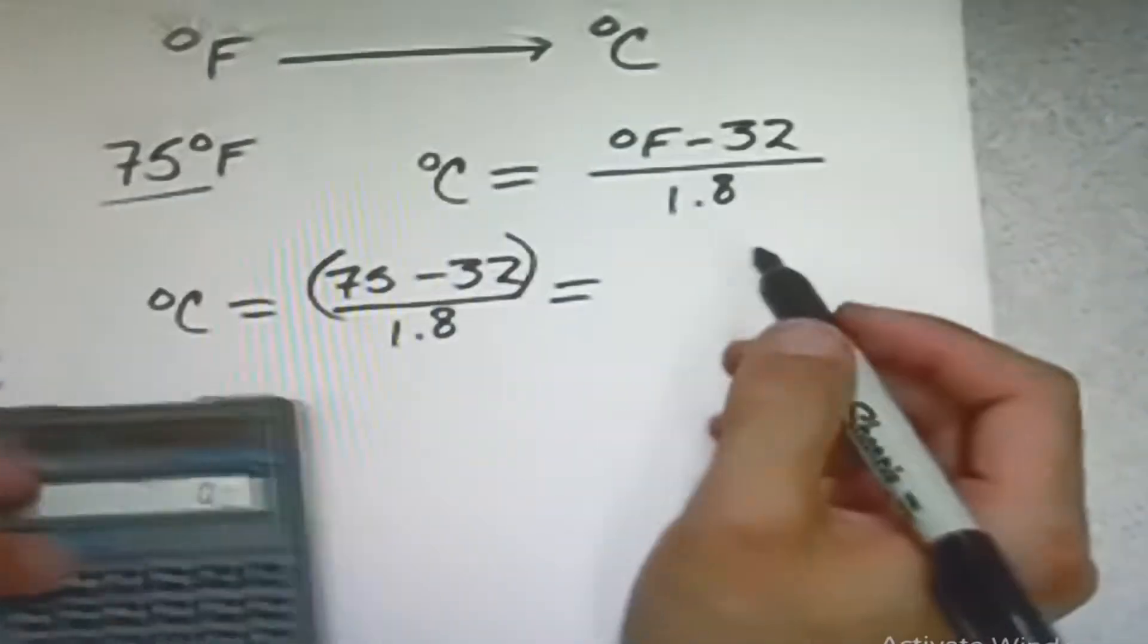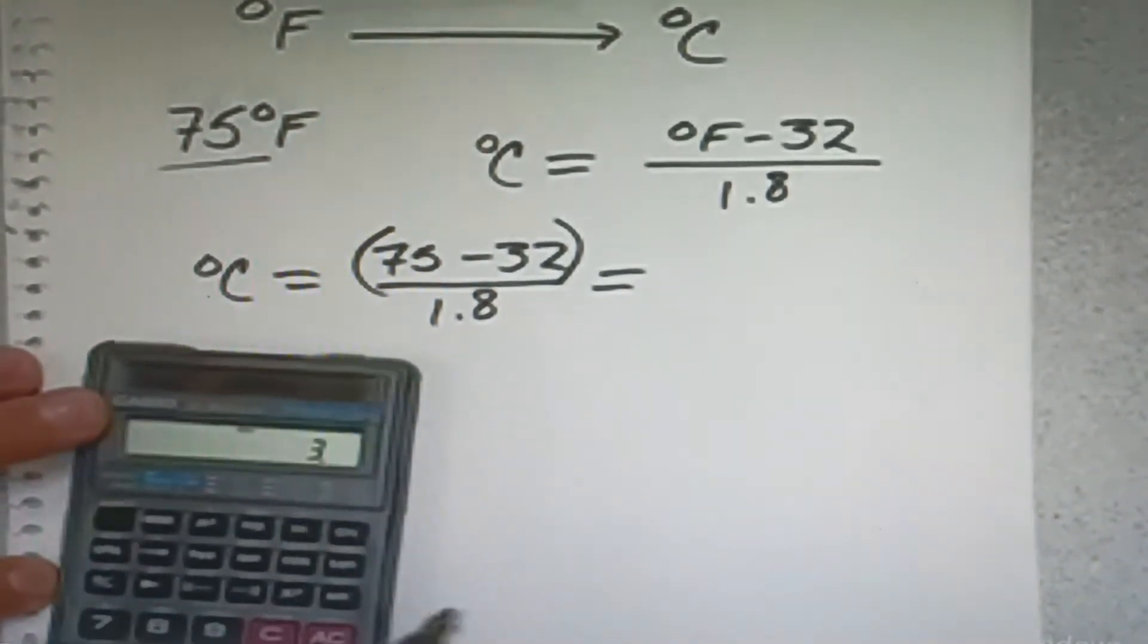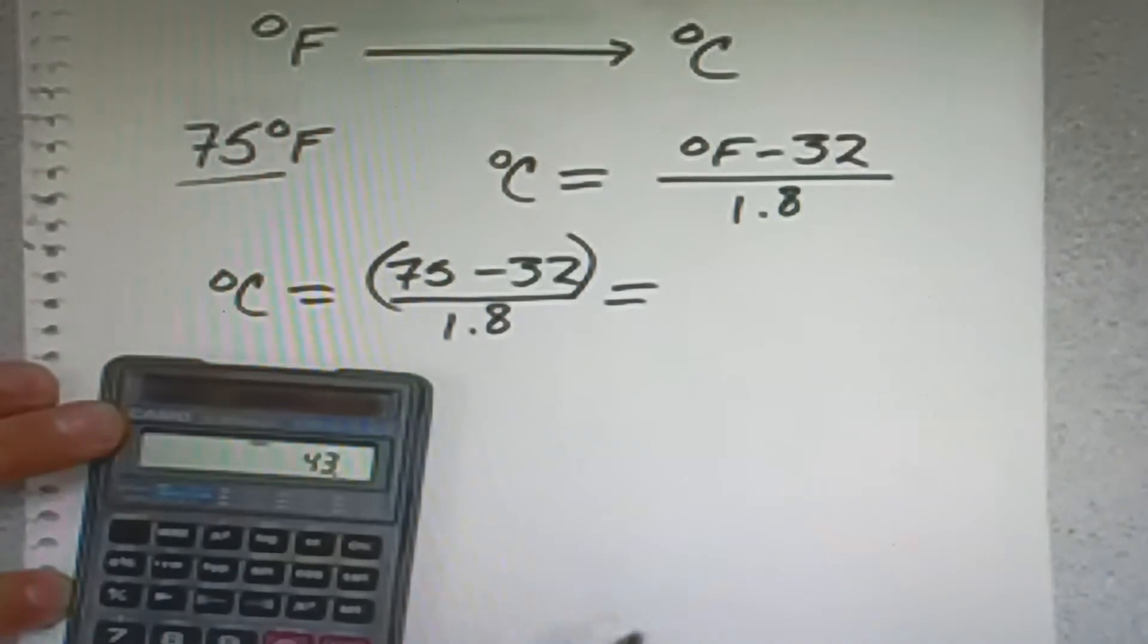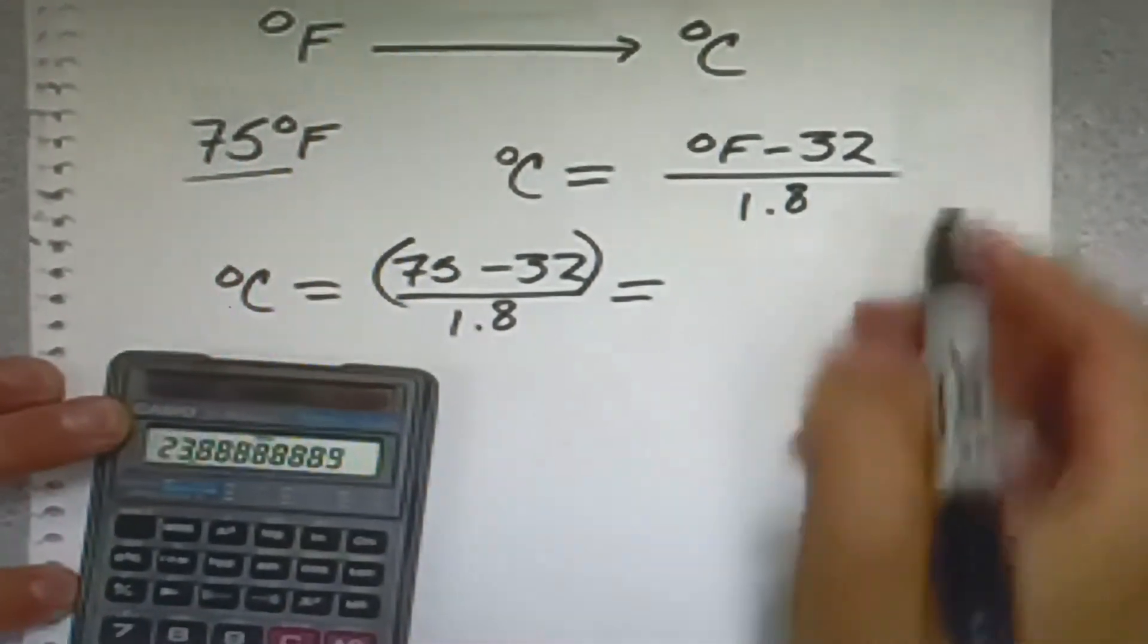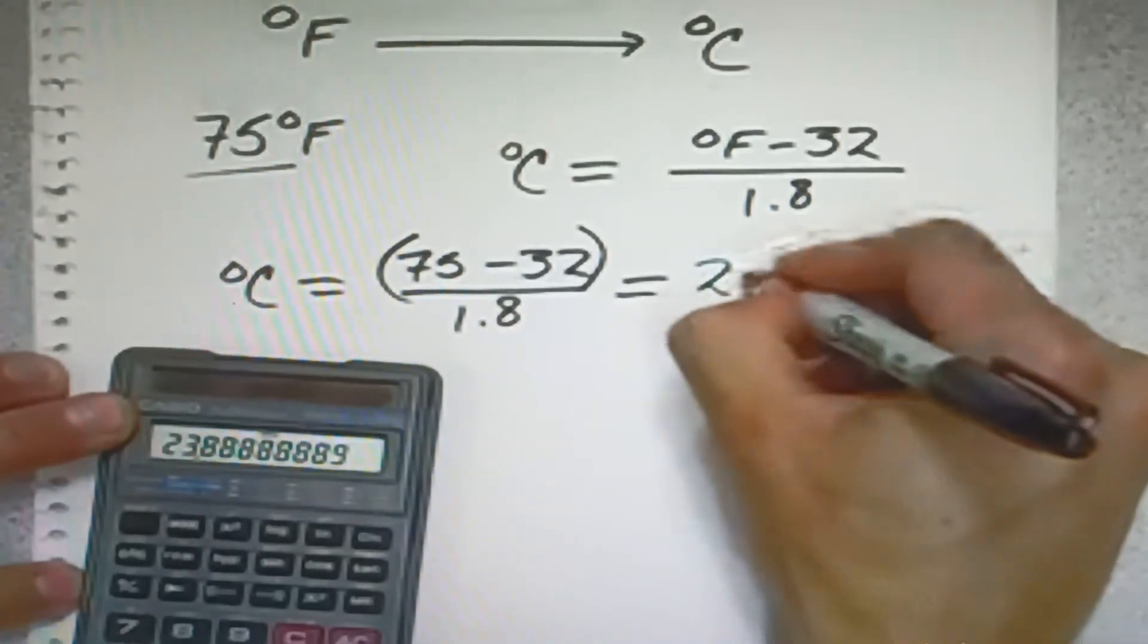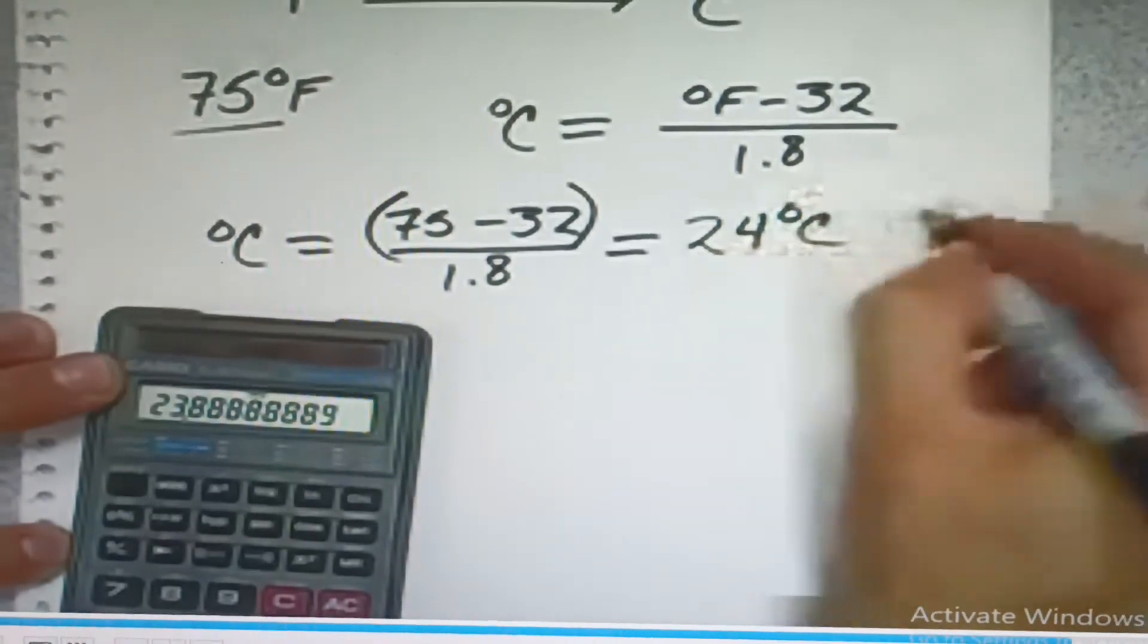So we can take our calculator and do this. 75 minus 32 equals 43 divided by 1.8 equals 23, which would round up to 24 degrees Celsius.